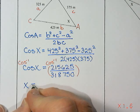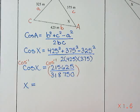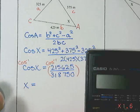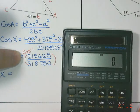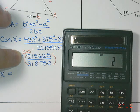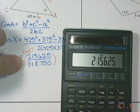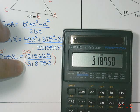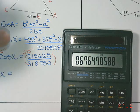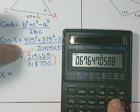So to do this on my calculator, I need to do the fraction first. So bracket 215,625 divided by 318,750, close my bracket, and then do shift and cos,